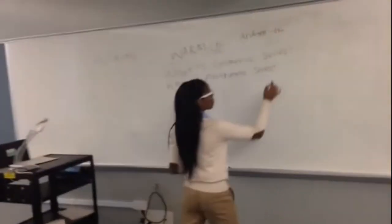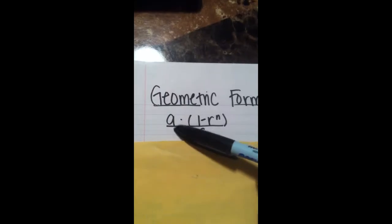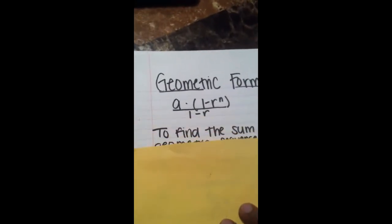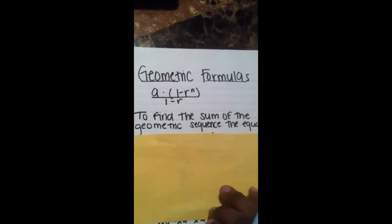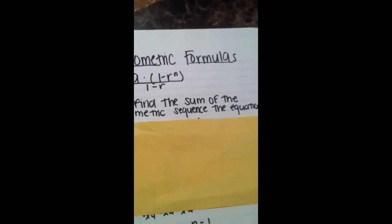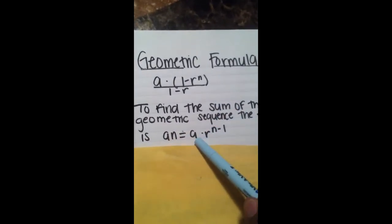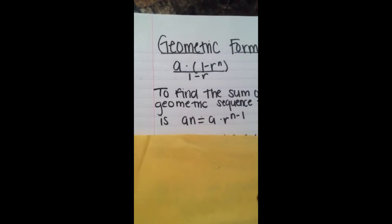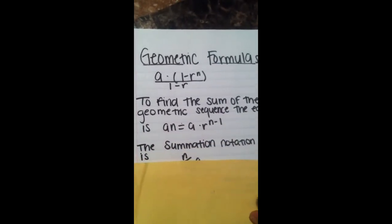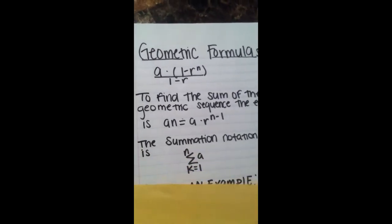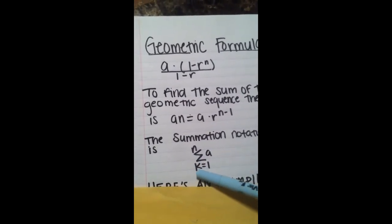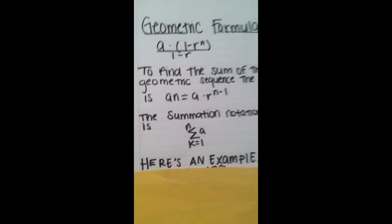Now I'm going to tell you all the formulas for Geometric and Arithmetic Series. a times open parenthesis 1 minus r to the nth power, close parenthesis, over 1 minus r is the geometric formula. To find the summation notation of the geometric formula, the equation is n, the crazy looking e, a, and k equals 1. k will always equals 1 at the bottom. Now, here's an example.